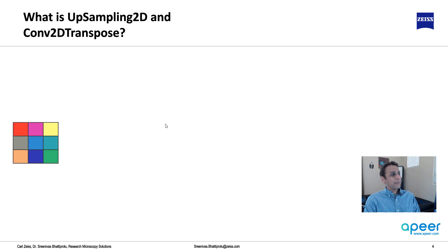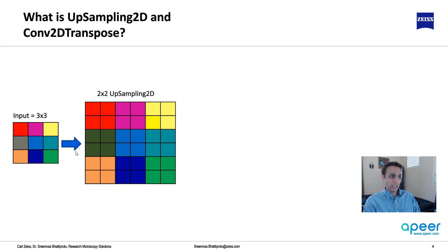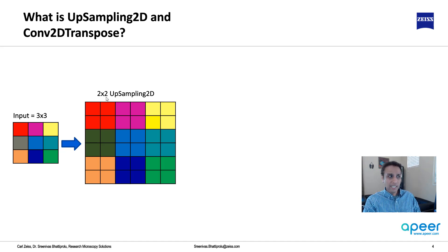Let me start by talking about upsampling first. Let's say this is my input image — it's just a 3x3 pixel image. Now I'd like to perform 2x2 upsampling. This basically means repeating your pixels two-by-two times, so one pixel of the red square becomes four red squares, then the pink ones, then the yellow ones. You can see the output image is 6x6, and we started with 3x3, so the size doubled because we're using 2x2 upsampling.